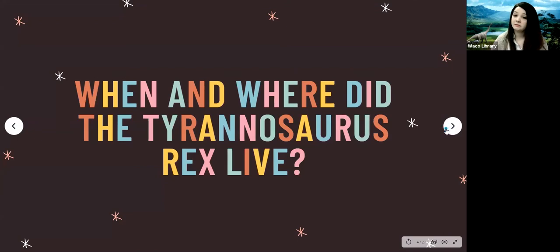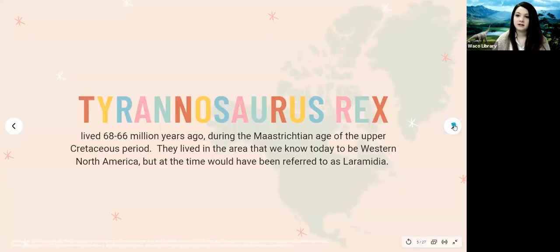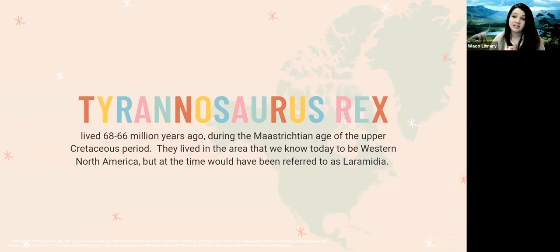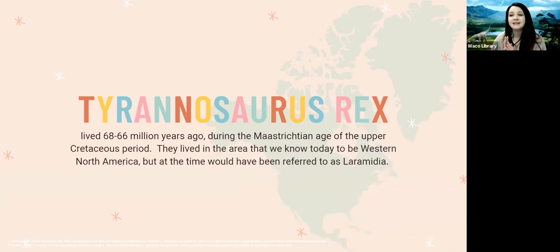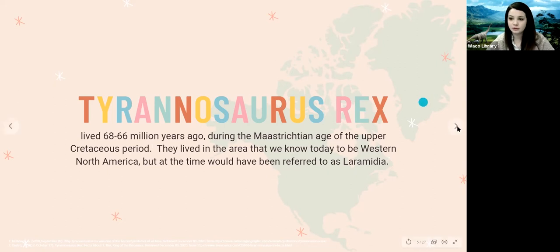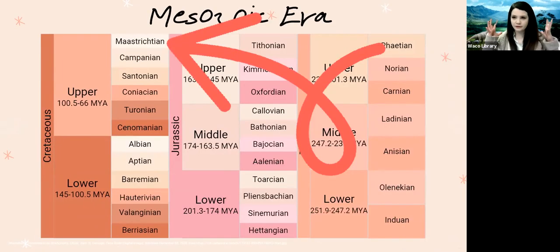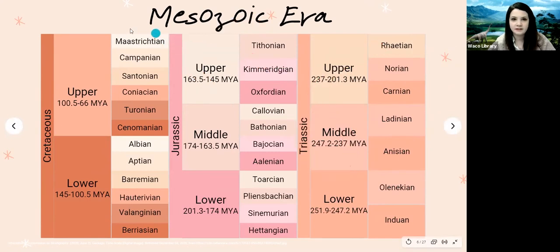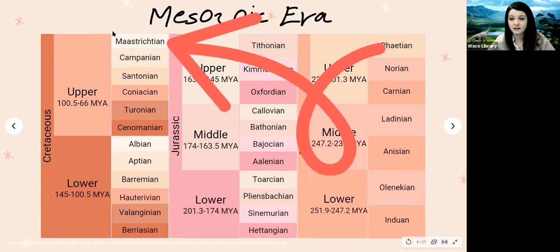So when and where did the Tyrannosaurus rex live? The Tyrannosaurus rex lived 68 to 66 million years ago during the Maastrichtian age of the upper Cretaceous period, and they lived in the area we know today as western North America — Canada, Washington, Montana, Oregon — that whole upper western region, which at the time would have been referred to as Laramidia. From the chart we looked at last week, T-Rex lived only at this very last period during the Mesozoic era.